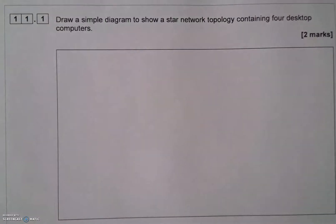In this question I'm going to draw a simple star network topology containing four desktop computers. Topology is the shape of the network, and the star topology should actually look like a star. So with four desktop computers I should be able to draw a diagram that actually looks like a star.